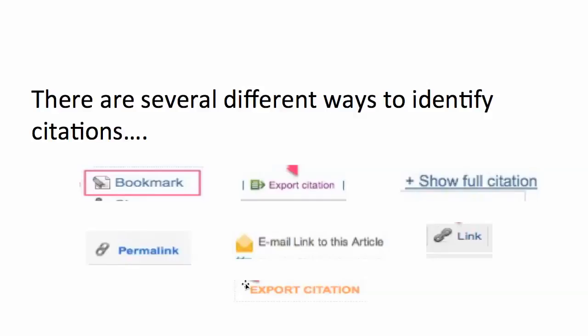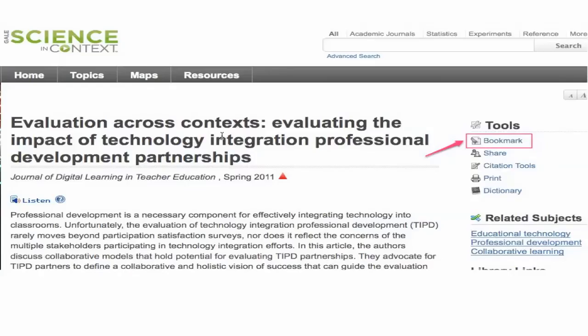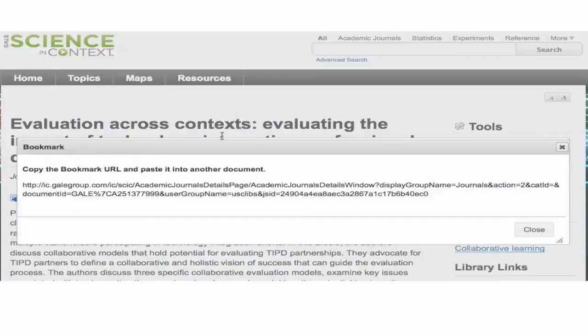There are several ways to identify citations. I've presented a variety of ways they can be presented, and we'll look at those through several examples. The first example is a bookmark — under Tools it says 'Bookmark.' You click Bookmark and you'll be given a URL, which you can copy and paste into your annotated bibliography document.